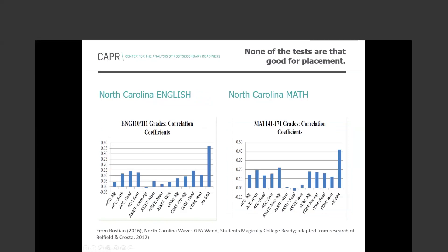Looking at North Carolina data from around 2011–2012, researchers compared all available tests against high school GPA as predictors of success in initial college-level courses. There was some variation across tests, but none predicted as well as GPA. This provides further evidence that for the most part, tests are not going to do as good a job as GPA.